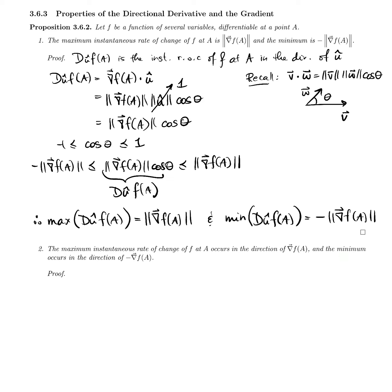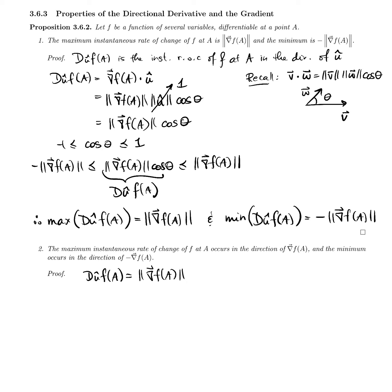The minimum occurs when u-hat points in the direction of the negative gradient. Taking the relationship from part one, we can write the directional derivative at any point a as the norm of the gradient times cos θ, where θ is the angle between the gradient and the vector u-hat in whose direction we are taking the instantaneous rate of change. We want to show that when the directional derivative is at its maximum, u-hat points in the same direction as the gradient, and when it is at its minimum, u-hat points in the opposite direction.